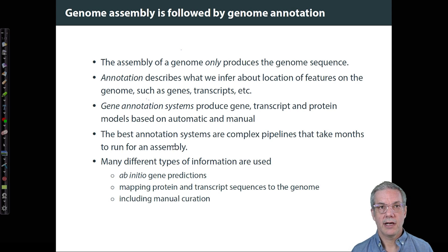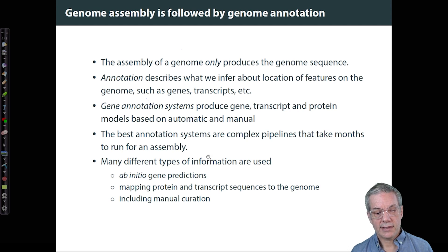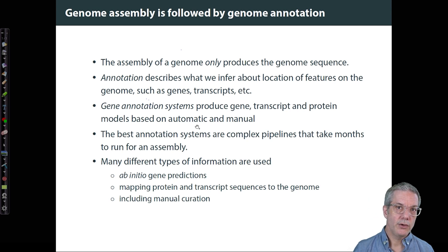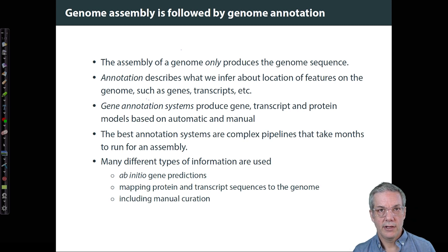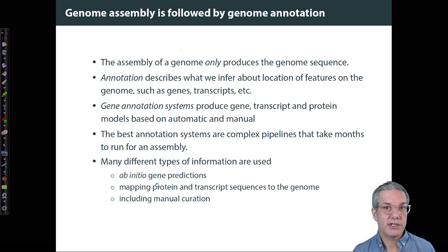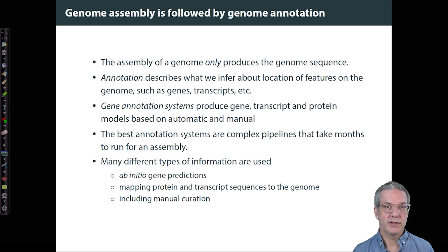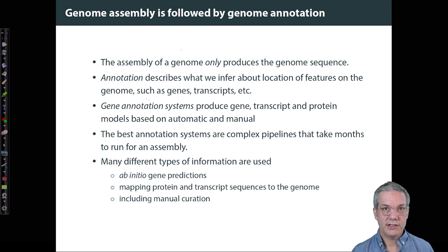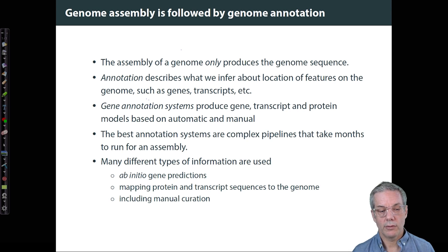These annotation systems use a combination of different approaches. There are ab initio gene predictions, which simply predict where genes are from properties of the sequence itself. Another approach uses protein or transcript sequences that map to the genome — the position of the mapping helps infer the positions of genes, and then they can refine that by manual curation. The process of annotation is not static; it's constantly being updated as we learn more from, for example, comparative genomics.